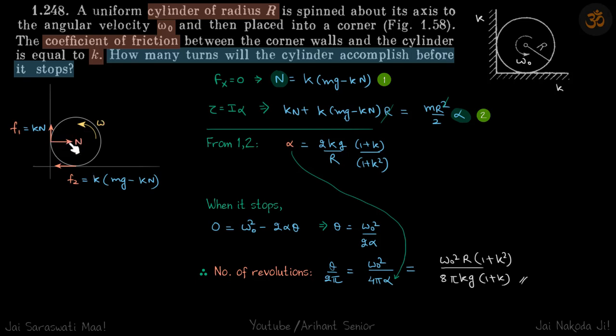One force will be normal from the wall. If that is N, frictional force will be KN upwards. Because it's rotating in the anticlockwise direction, frictional force will be upwards. And here frictional force will be towards left.